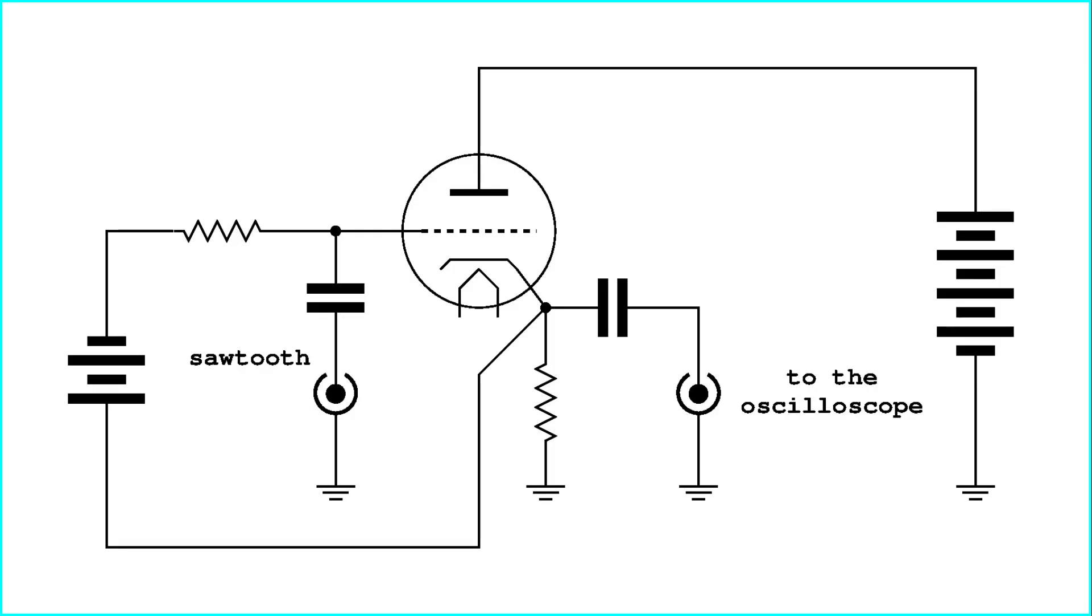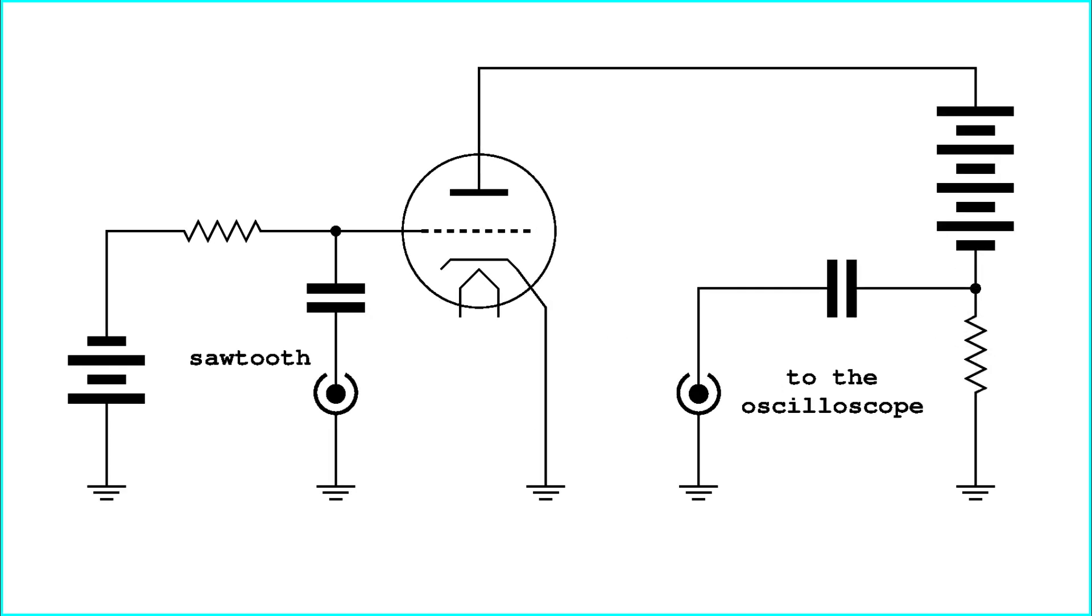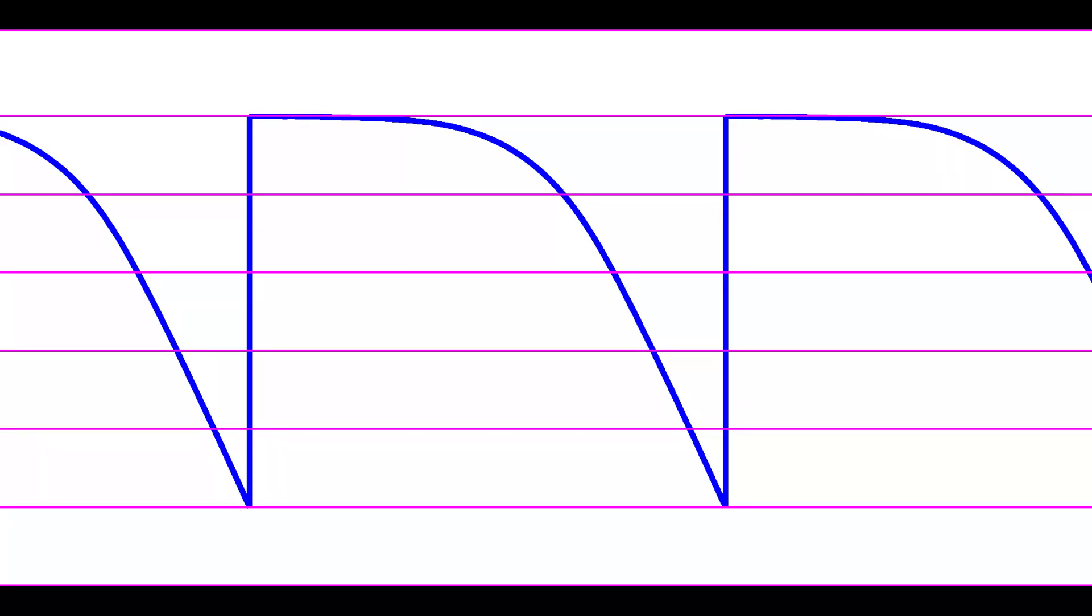For various reasons, it might be judged more appropriate to align the ground to the cathode of the tube under test. This would be probably okay, but the curve appearing on the oscilloscope screen would be flipped vertically.